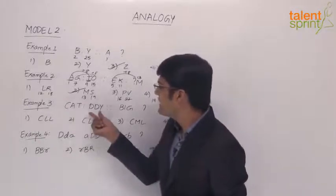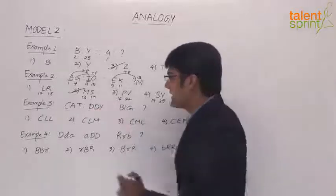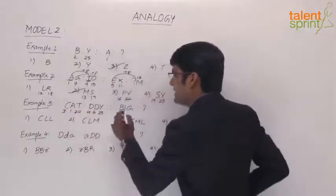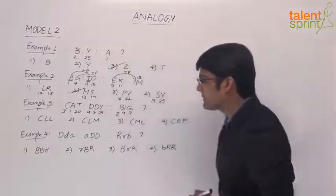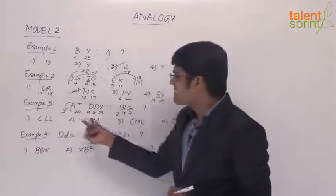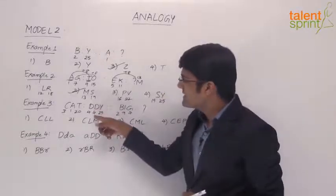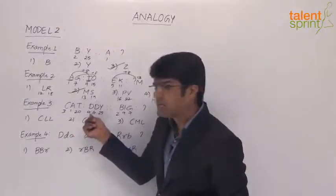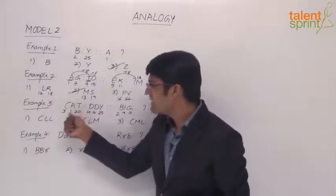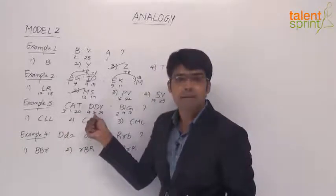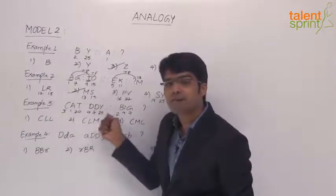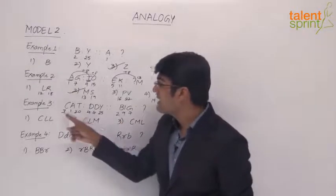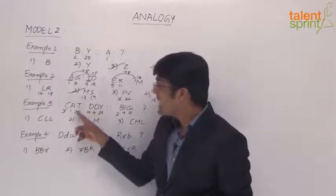Let us now look at Example 3. It says CAT is to DDY — then BIG is to what? Let us quickly work on the positions. C is 3, A is 1, and T is 20. D is 4, D is 4, and Y is 25. B is 2, I is 9, and G is 7. Looking at what could be the logic: in the first position, C is 3 and D is 4 — 3 plus 1 is 4. In the second position, A is 1 and D is 4 — 1 plus 3 is 4. In the third position, 20 plus 5 is 25. So we have plus 1 in the first position, plus 3 in the second position, and plus 5 in the third position.